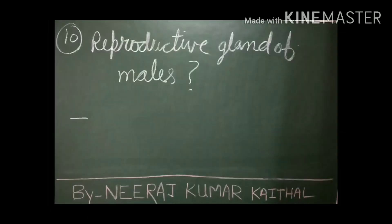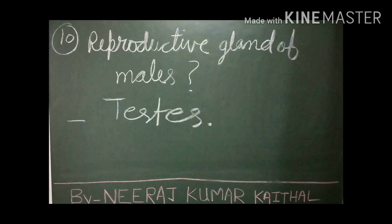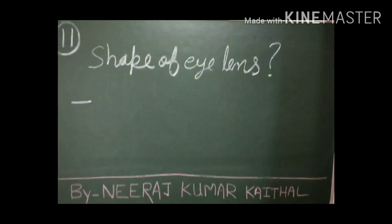Question number ten: what is the reproductive gland of males? The testes, known as the male gonads or reproductive glands, are two in number and situated in the scrotum region. Their diameter is 2.5 centimeters and each testis weighs approximately 10 to 15 grams. Question number eleven: what is the shape of the eye lens? The shape of the eye lens is biconvex.